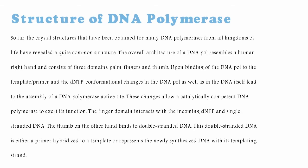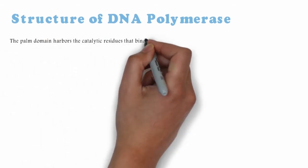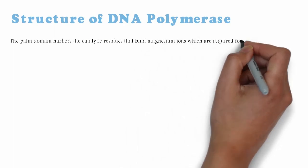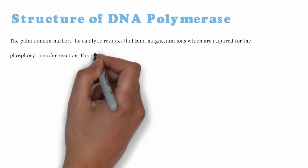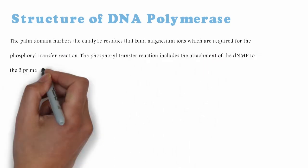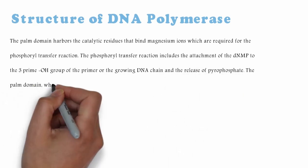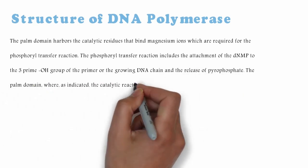The palm domain harbors the catalytic residues that bind magnesium ions, which are required for the phosphoryl transfer reaction. The phosphoryl transfer reaction includes the attachment of the dNMP to the 3'-OH group of the primer or the growing DNA chain and the release of pyrophosphate.